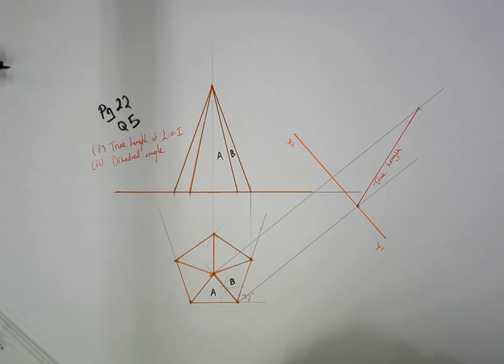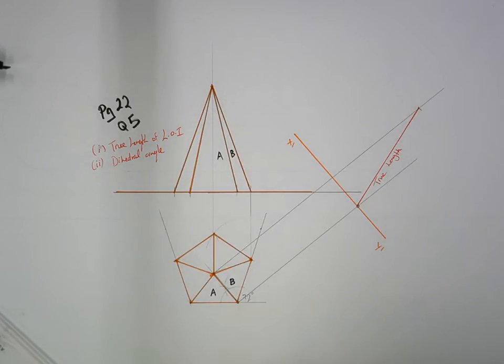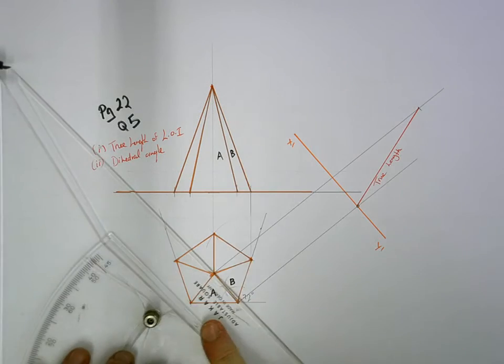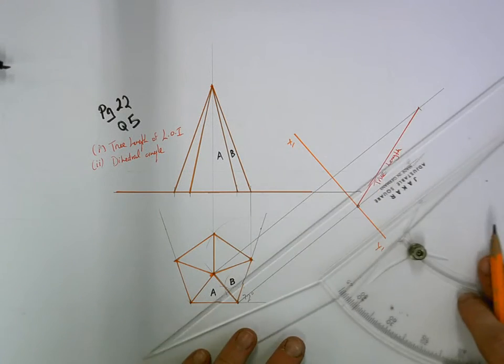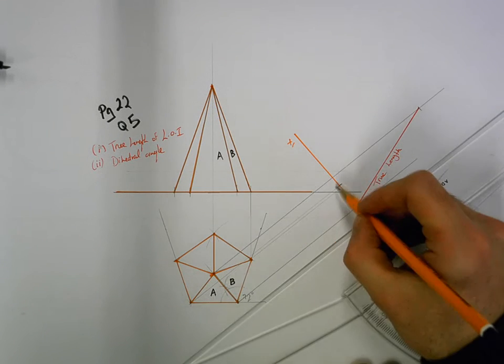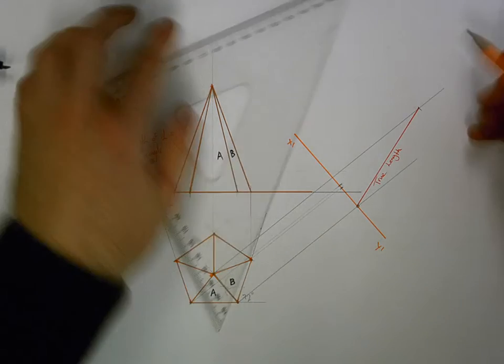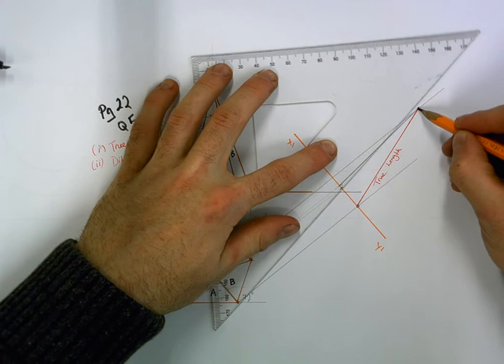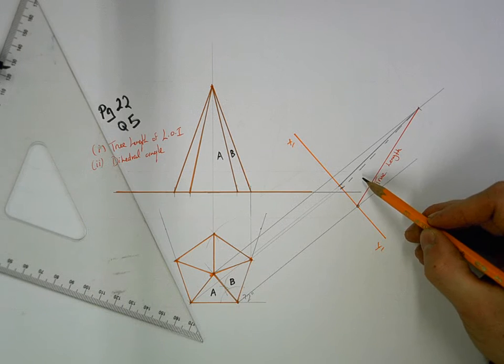But before we do that, we have to have at least three points on each surface. So if we were to look at surface A, at the minute in that auxiliary we have two points on surface A. We have both ends of the line of intersection. But we don't have a third one. The easiest third one is just the one here on the outside. So all I'm going to do is bring that straight up. Just to make sure this angle hasn't changed. So bring that straight up. And the same for B. If I join both of those to either end of the line of intersection, I will have drawn an auxiliary of both surfaces. OK. So A is slightly towards the front and B is hidden behind it.